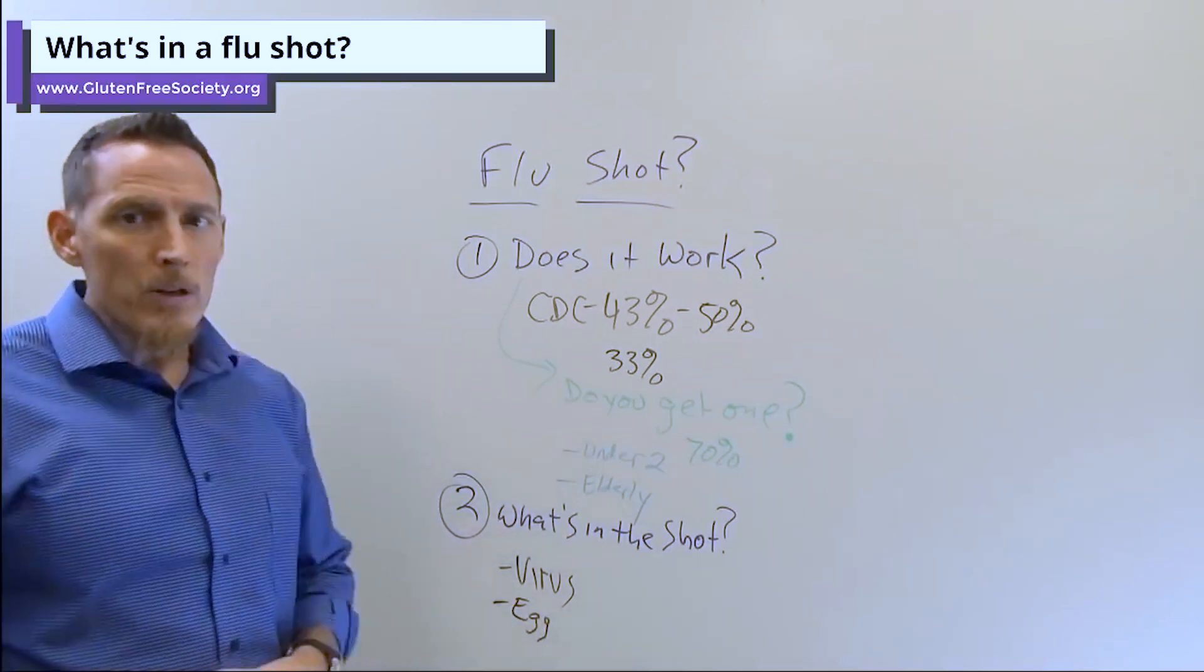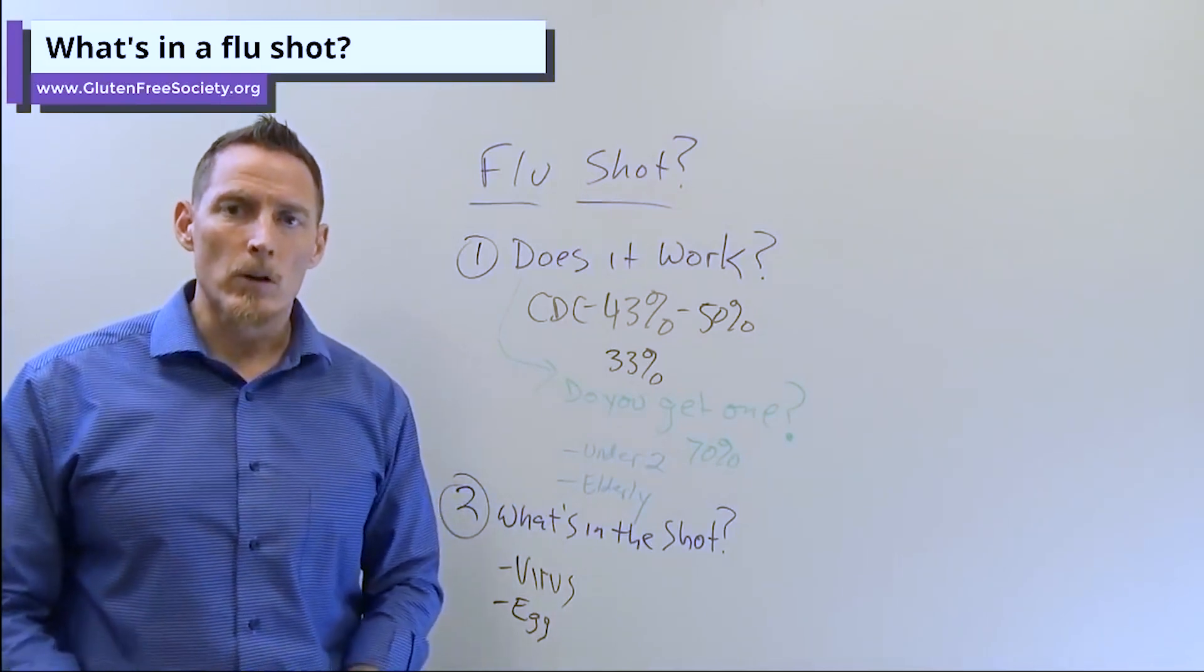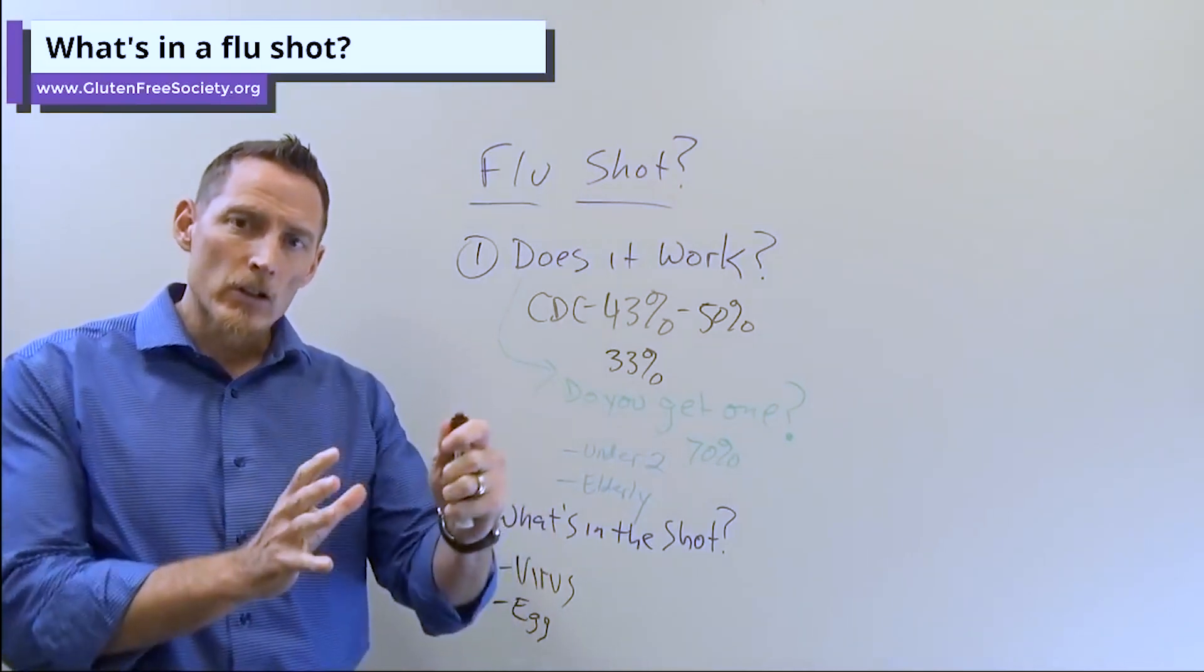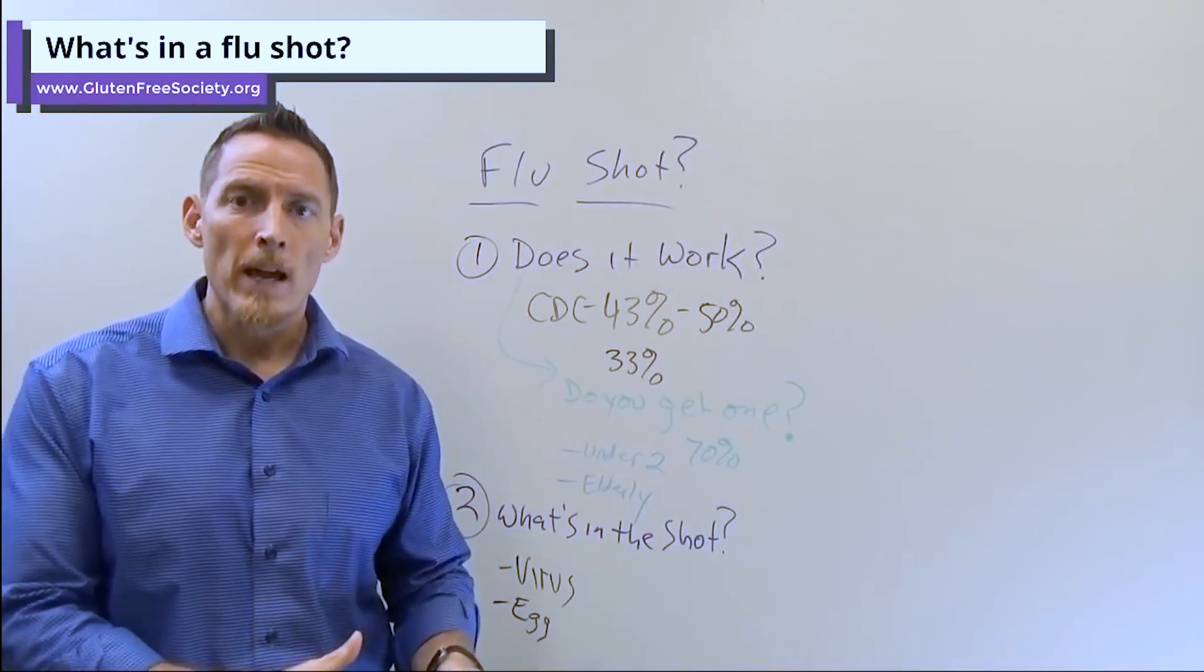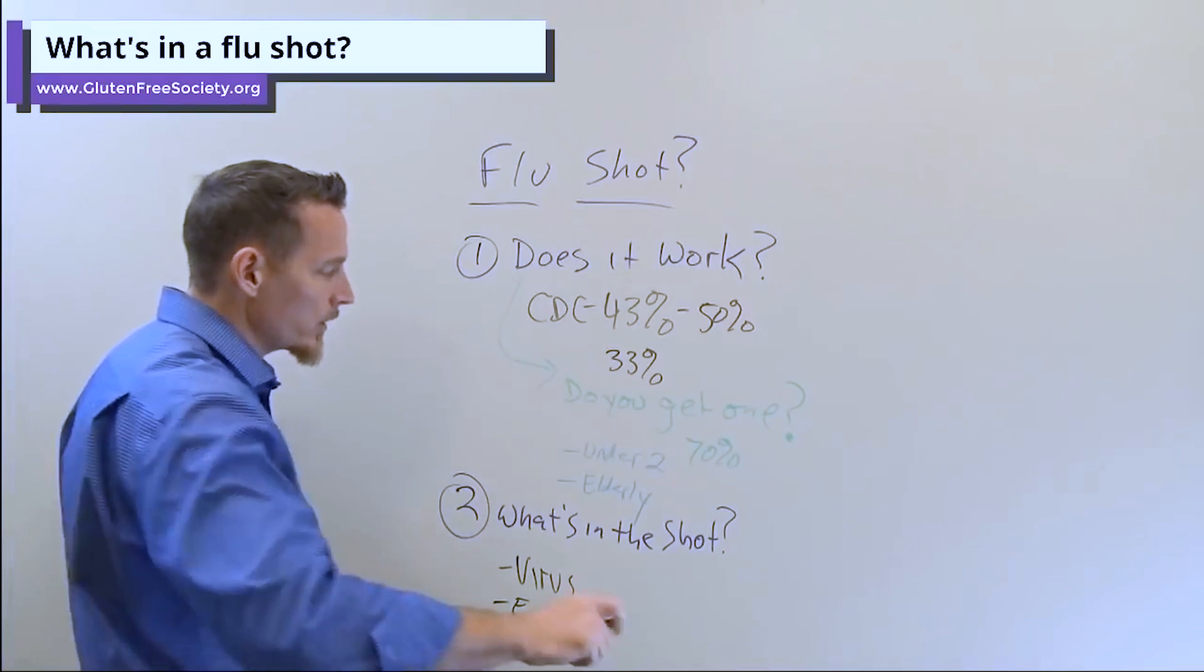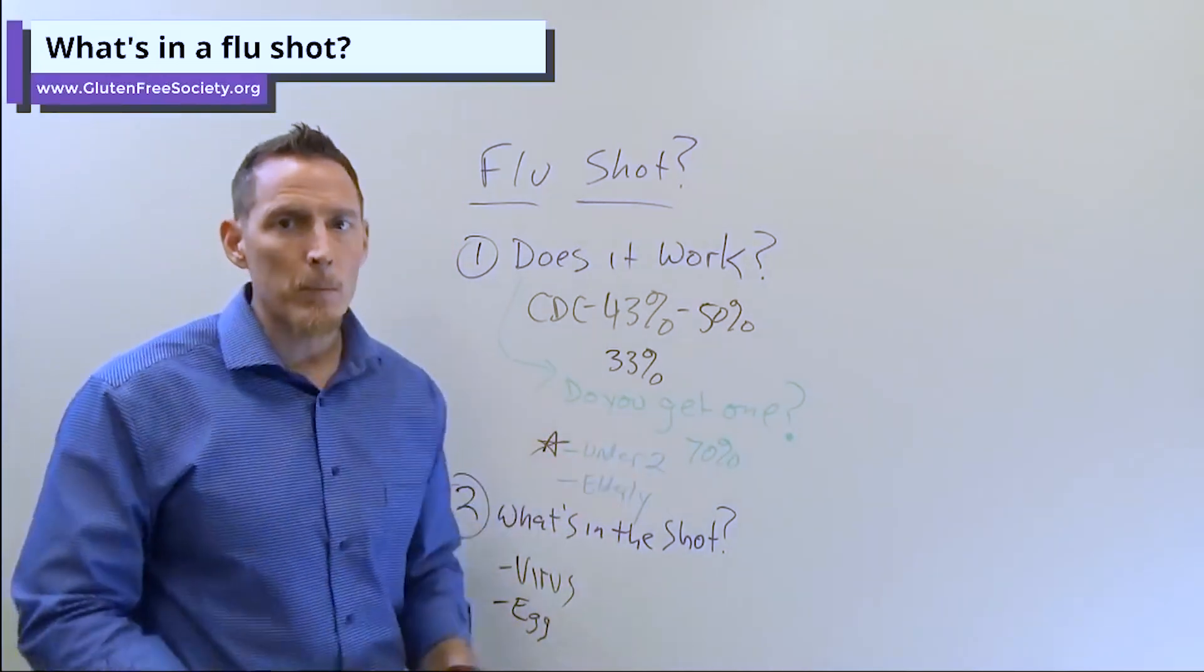Number two, one of the ingredients involved in flu shots is egg-based. Egg is one of the top eight allergens in the world, meaning that of all the allergens that are required to be labeled on a food label, egg is one of those and many people are allergic to it.